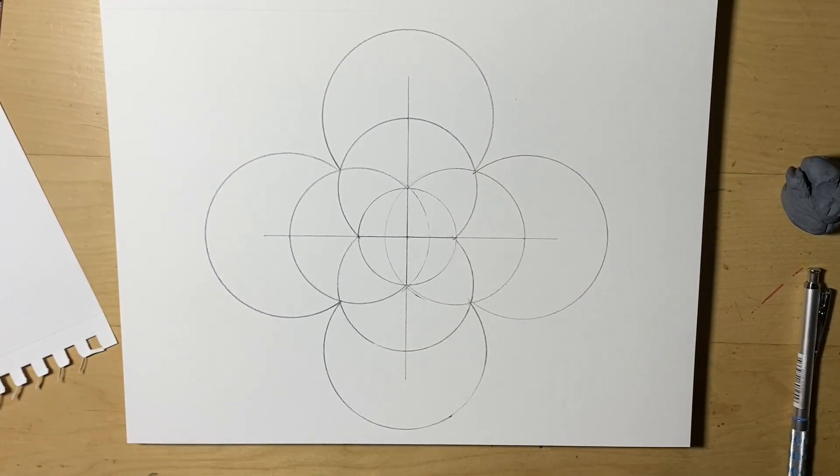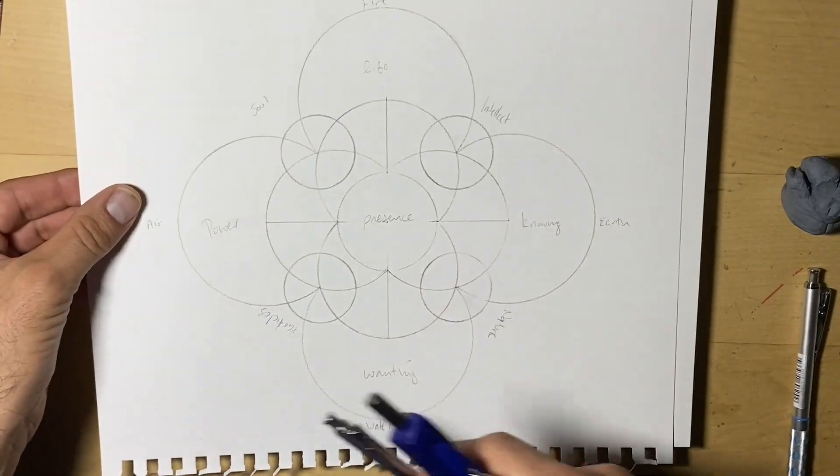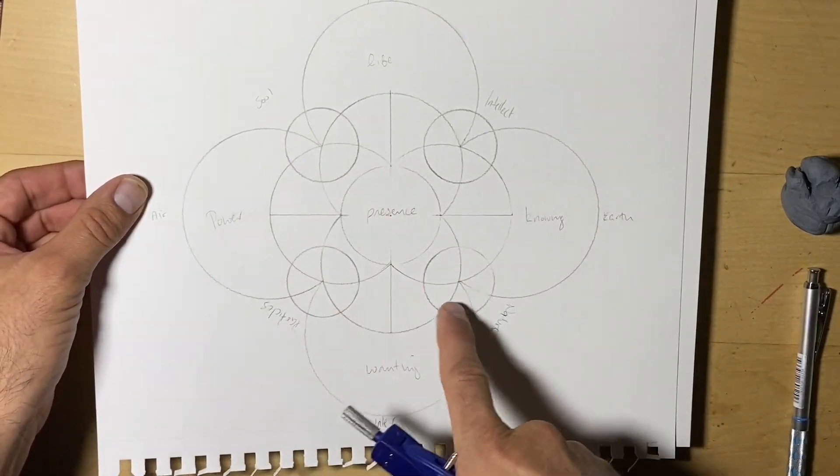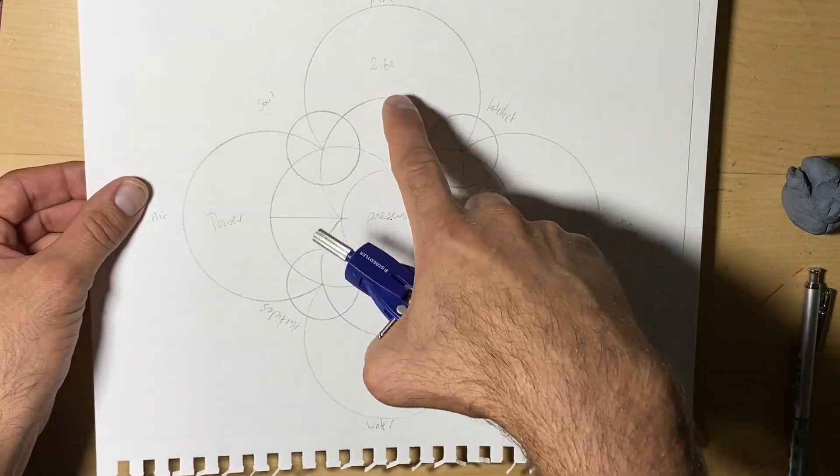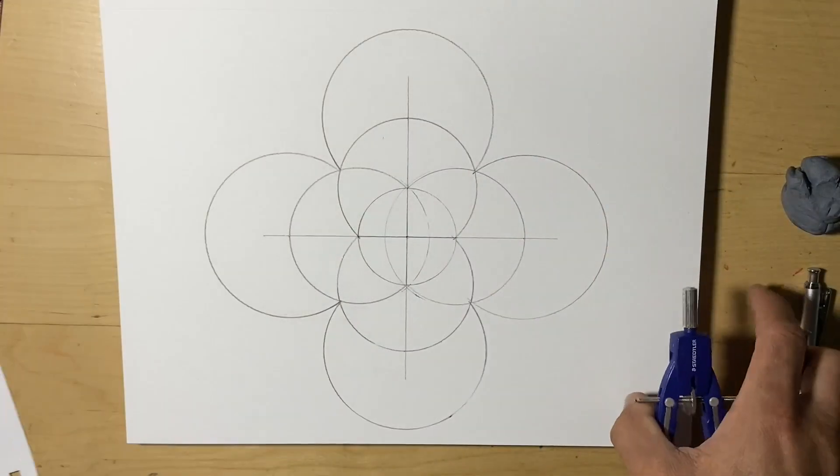Looking at the diagram, we have these four smaller circles, and they're going to be half the distance of this line here.